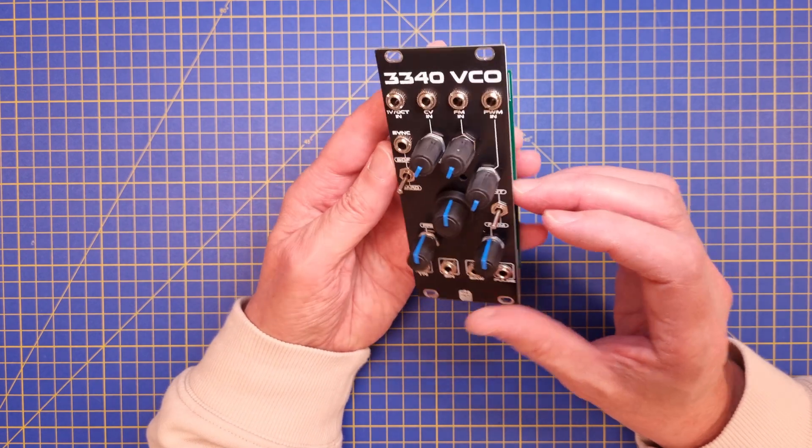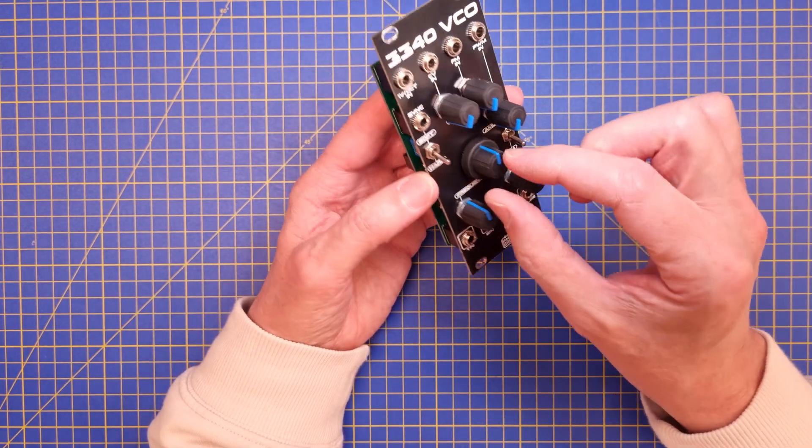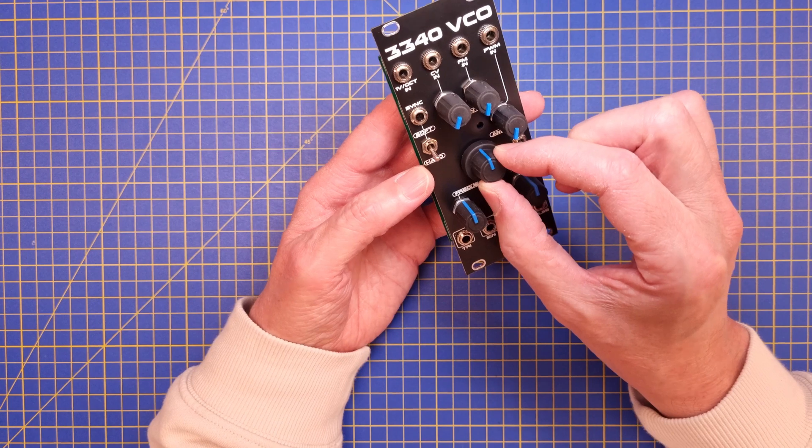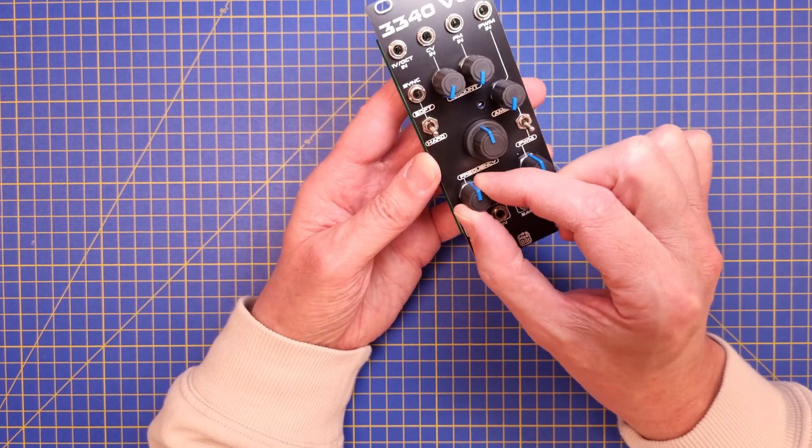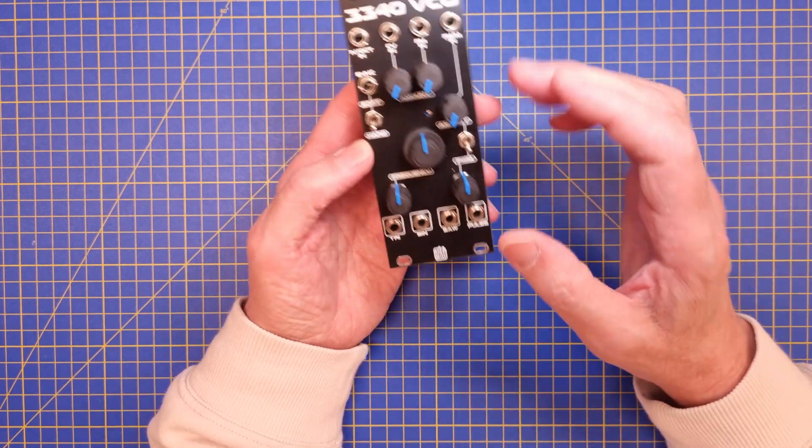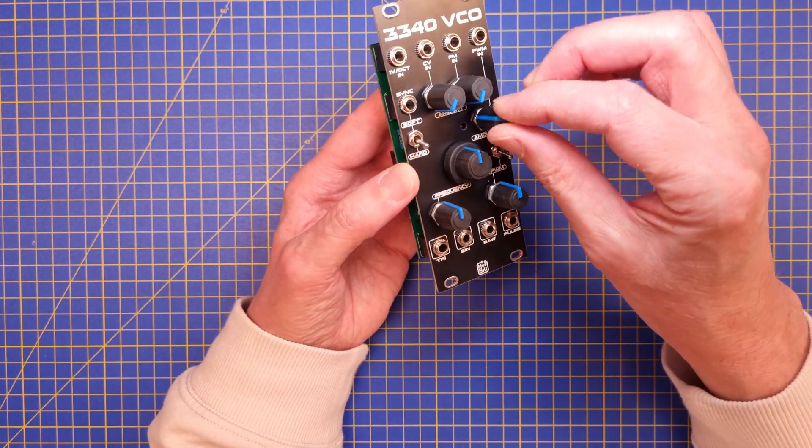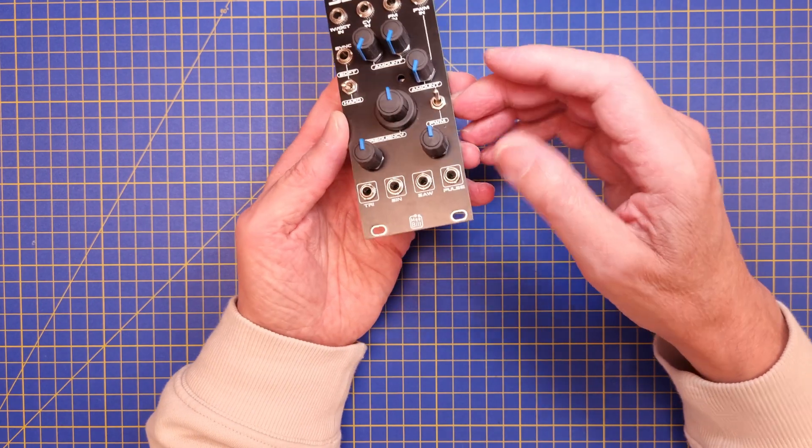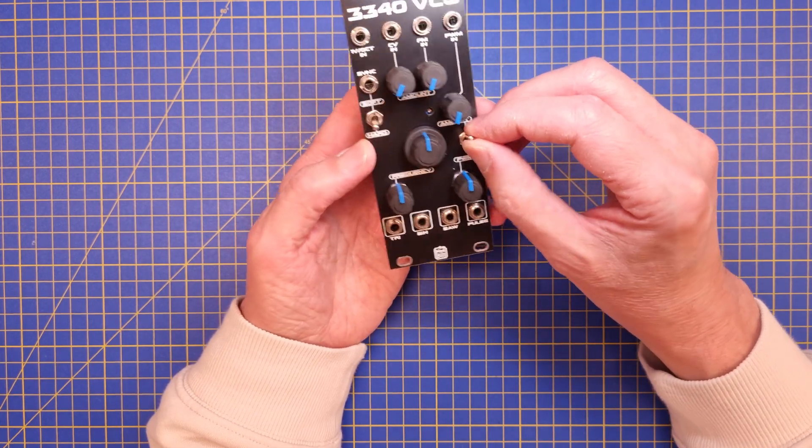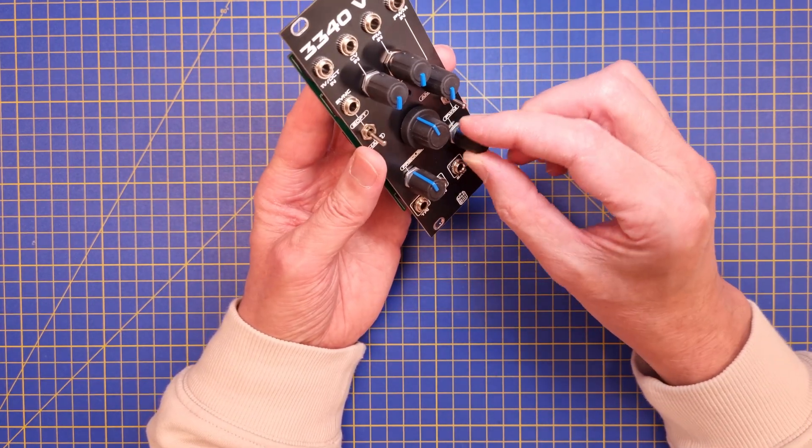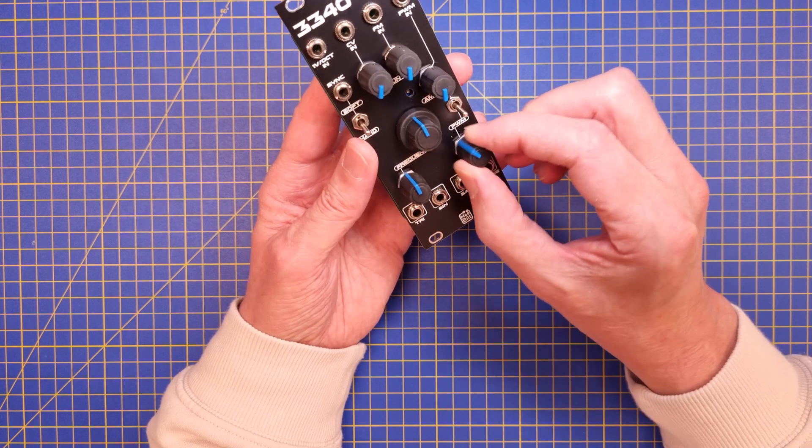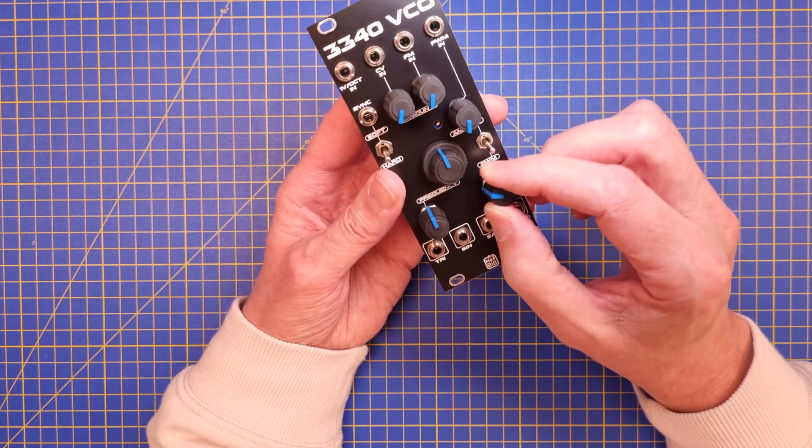And if we look at the front panel, we have the frequency knob here, coarse and fine for fine tuning. There's a PWM input with an amount pot, and then you can switch from modulating the PWM or if you want to set it at a fixed value with a control pot like this.